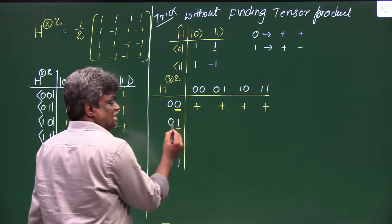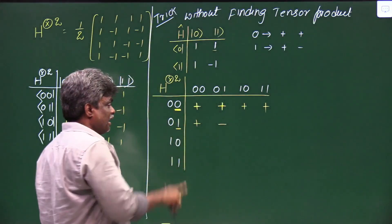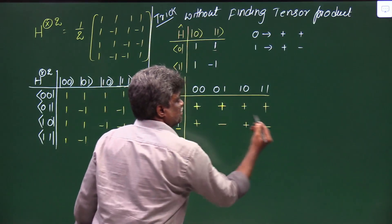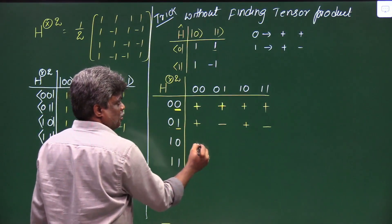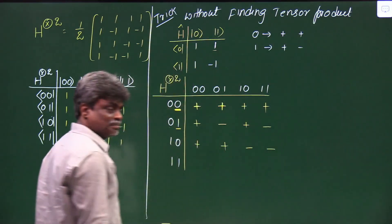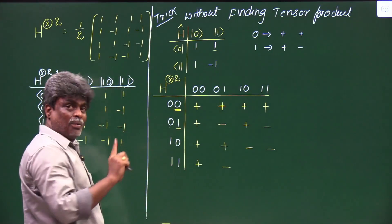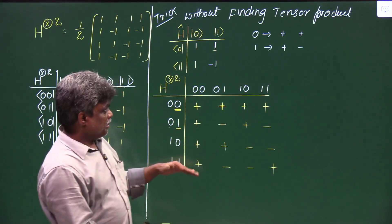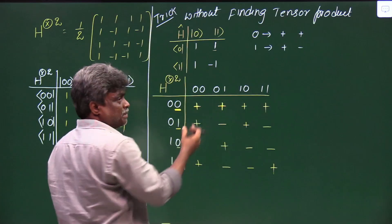Continuing the H⊗2 trick: for |10⟩, the first bit is 1, so write '+, −'. The second bit is 0, so repeat the same: '+, −'. Result: +, −, +, −. For |11⟩: first bit is 1, so '+, −'. Second bit is also 1, so take the opposite: '−, +'. Result: +, −, −, +. So plus means +1 and minus means −1. This directly gives us all the coefficients in the H⊗2 matrix.